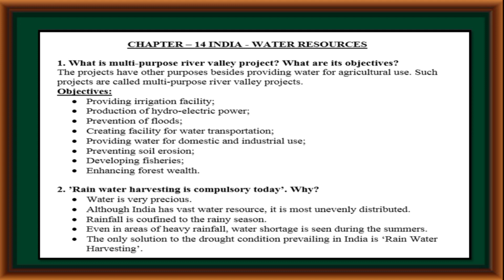Rainwater harvesting is compulsory today. Why? Water is very precious. Although India has a vast water source, it is most unevenly distributed. Rainfall is confined to the rainy season. Even in areas of heavy rainfall, water scarcity is seen during the summers. The only solution to drought conditions prevailing in India is rainwater harvesting.